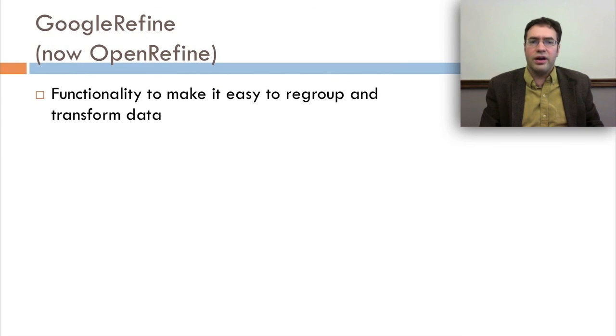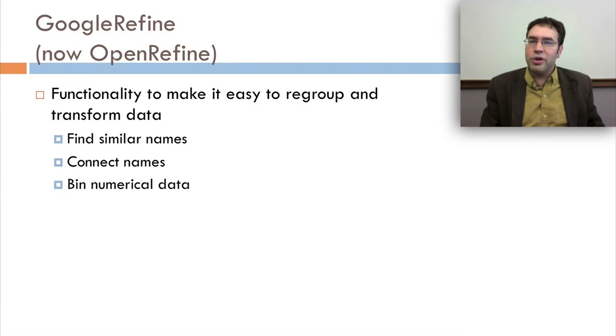Another tool that's nice is Google Refine, recently renamed OpenRefine, which has functionality to make it easy to regroup and transform data. It can find similar names, real nice if you're looking at, say, student data. It can connect names to each other. It can bin numerical data.